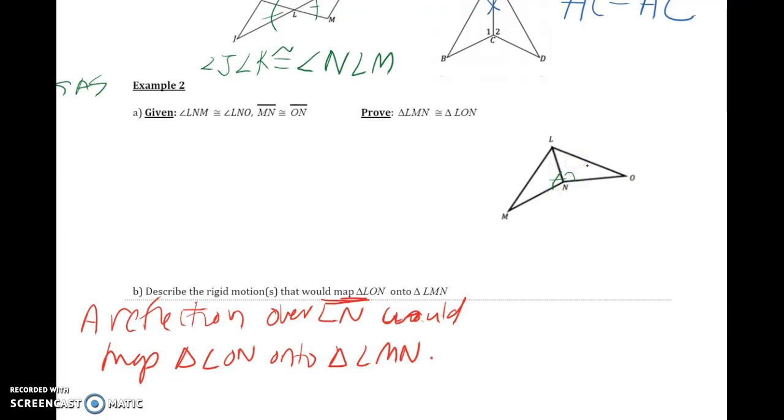Angle LNM is congruent to angle LNO, so I've marked that on my diagram. Additionally, they give me that MN is congruent to NO, and I've marked that on my diagram. So if I notice, I have a side and an angle.